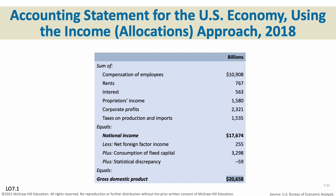Using the income approach, you arrive at the same number. All employee compensation goes first, then all rents, all interest, all proprietors' income, corporate profits, and taxes on production and imports. National income is the sum total of all of that. Then we take out foreign factor income — income our companies have made in other countries, like Ford building cars in Germany, which gets subtracted from our GDP since it wasn't done in our borders. We also add back consumption of fixed capital — equipment and vehicles that get used up — plus a statistical adjuster. You wind up with the exact same answer regardless of whether you use all the income or all the spending.